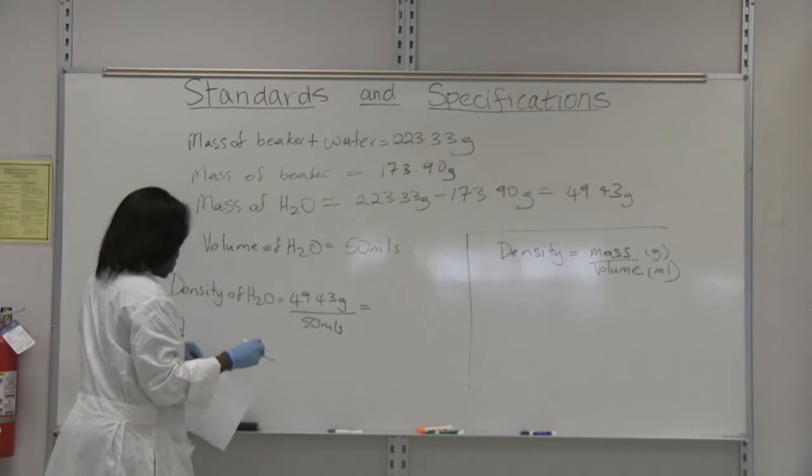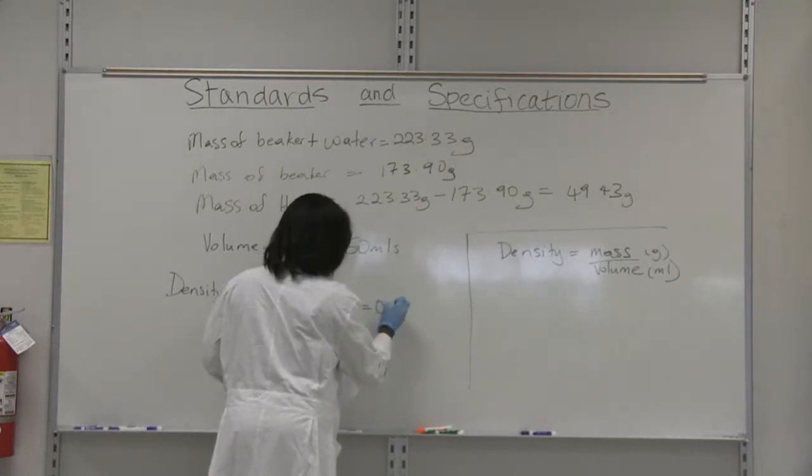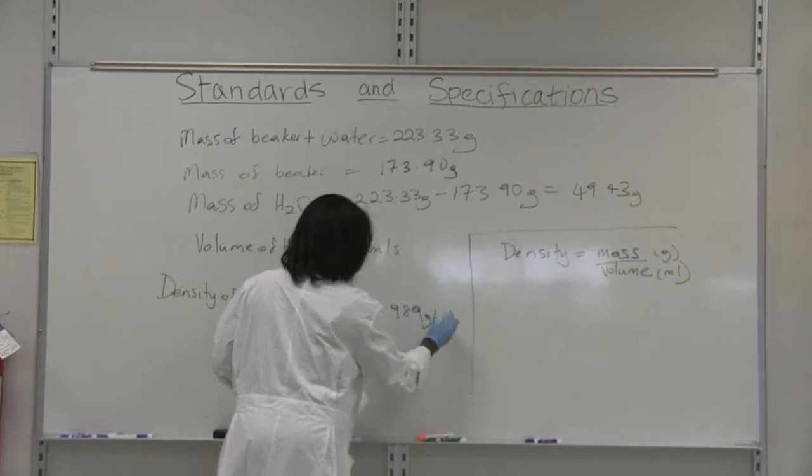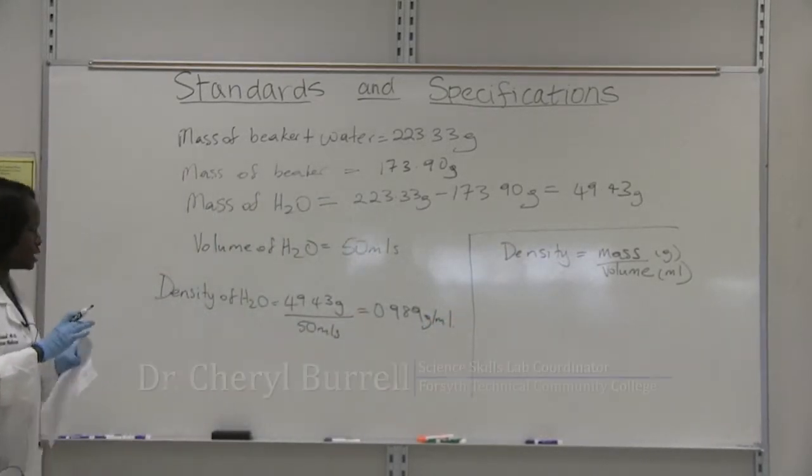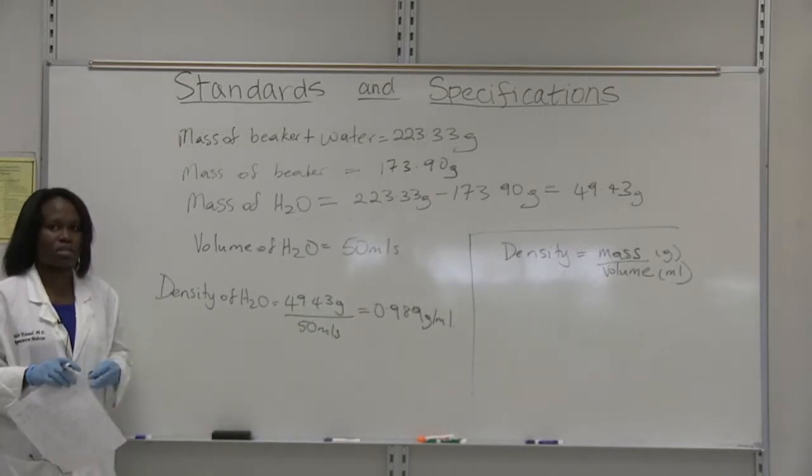And when we use our calculator, we get 0.989 grams per mil. So that is the density of water that we calculated based on our experimental data.